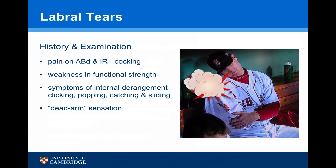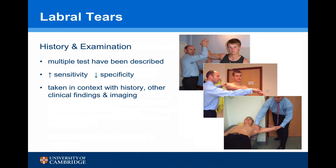Important factors to take into the history and examination with labral tears are the history of pain on abduction and internal rotation — so in the cocking position. There is often weakness in functional strength. The patient may describe symptoms of internal derangement, such as clicking, popping, catching, and locking. The patient will often have a dead arm sensation after throwing. Multiple tests have been described to examine labral tears. These are often very sensitive but have poor specificity, and there is no one test that is diagnostic of a labral tear. The results of these tests should be taken in context with history, other clinical findings, and imaging.